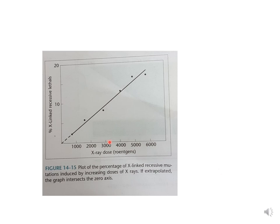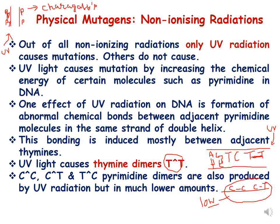In this graph, the x-axis shows x-ray dose in Roentgen units and the y-axis shows percent x-linked recessive mutations. The exponential graph indicates that as the dose increases, the number of mutations increases. This graph, from Klug and Cummings, plots the percentage of x-linked recessive mutations induced by increasing doses of x-rays, demonstrating the exponential rate of physical mutagenesis.